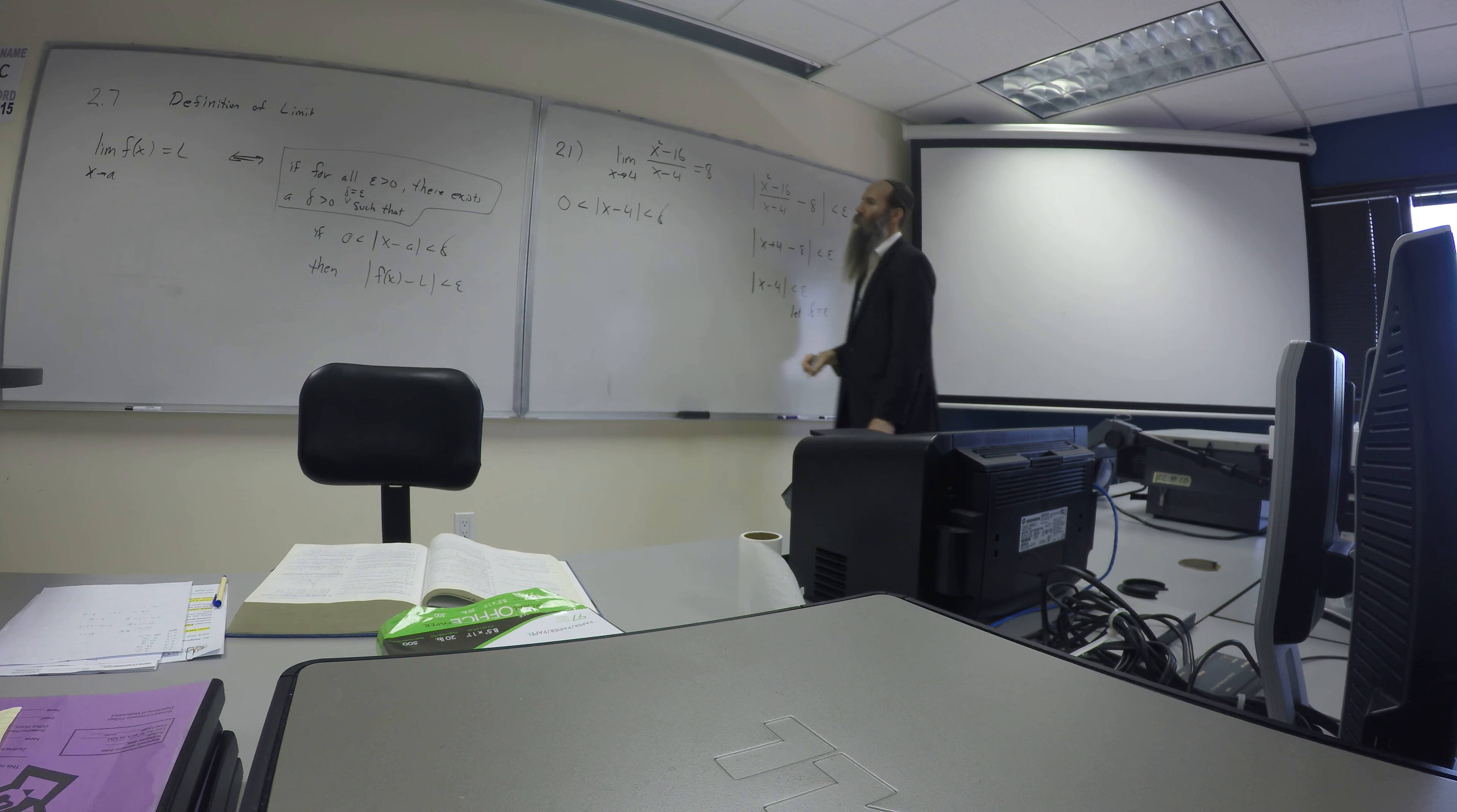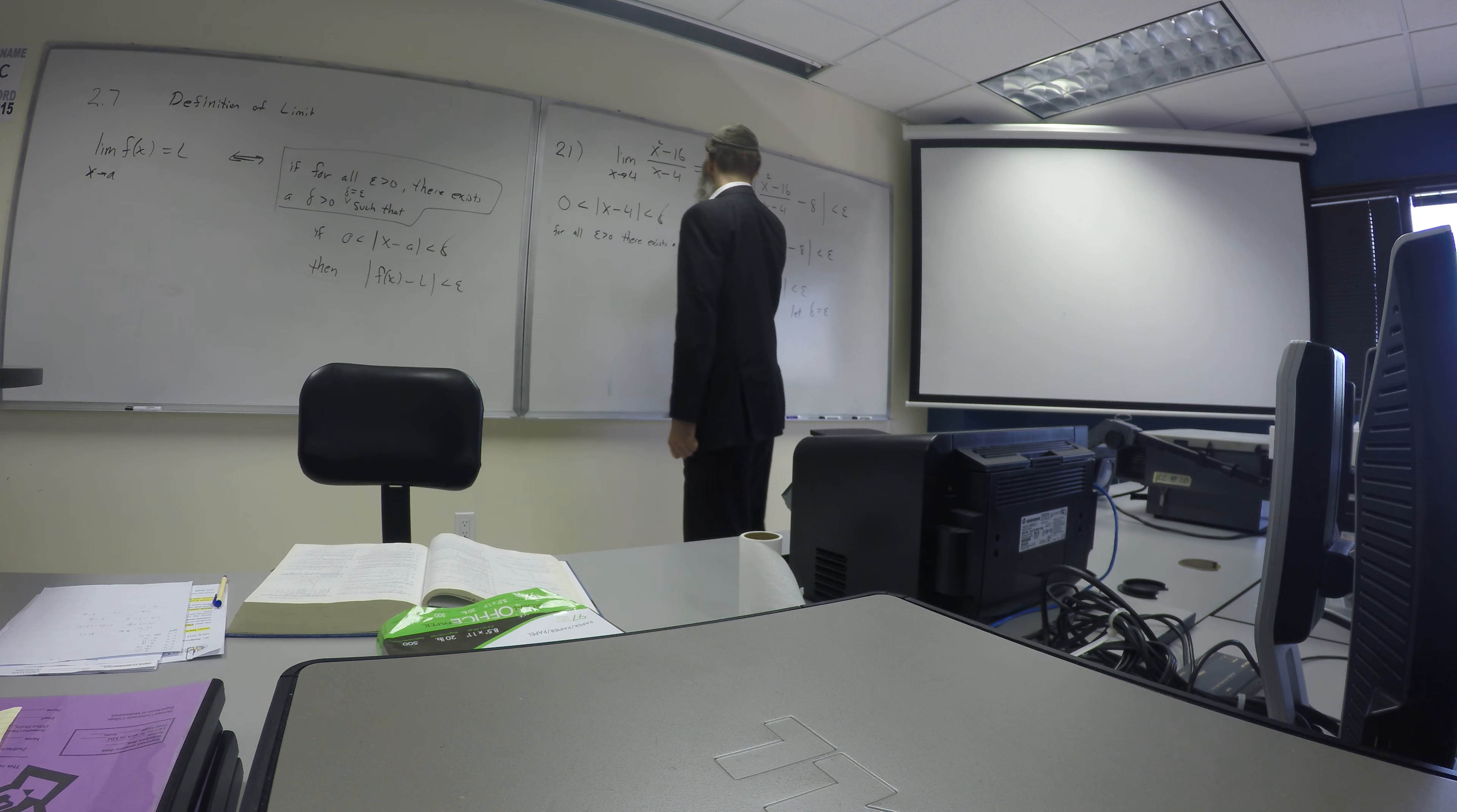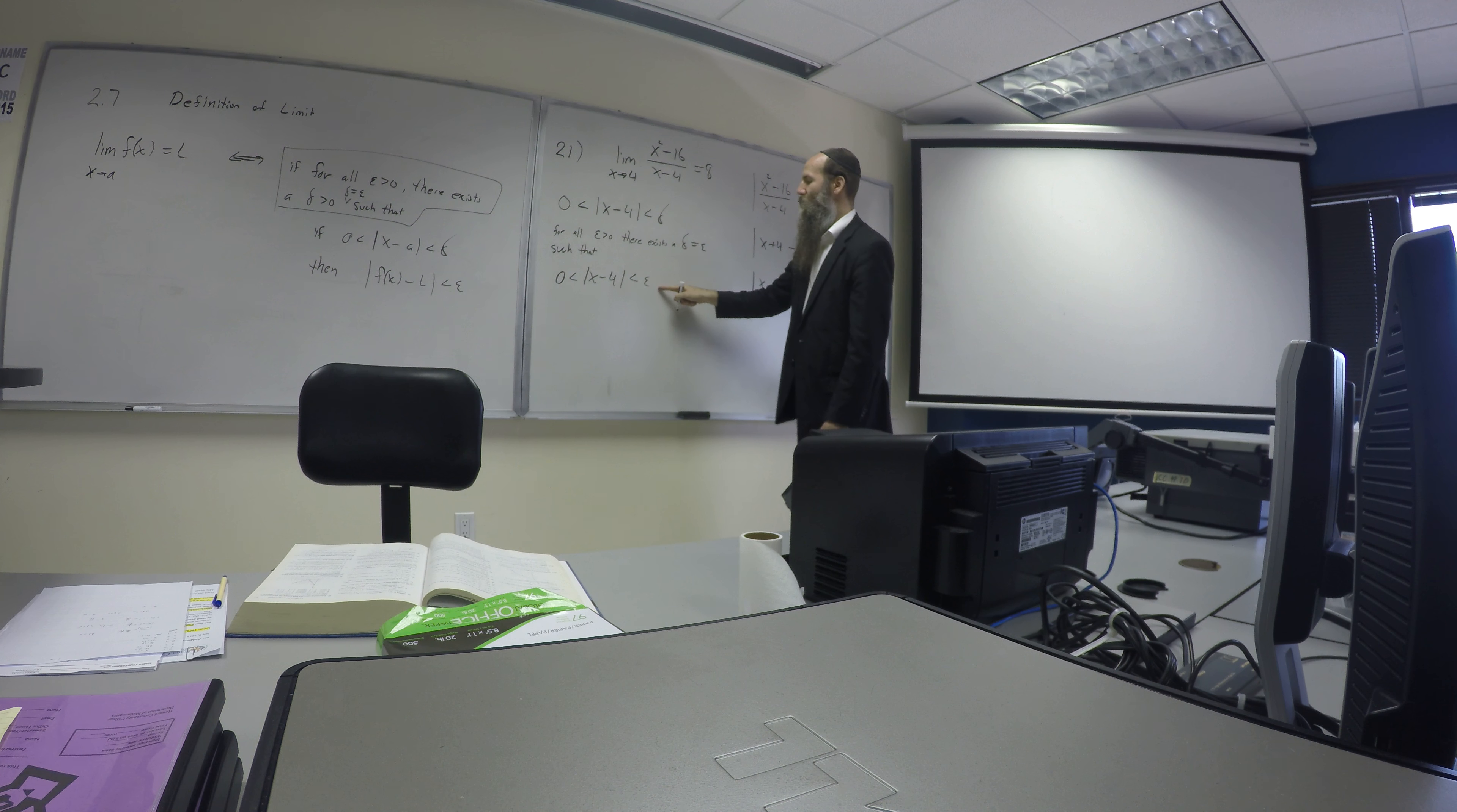Okay, now we know what to pick for delta, we'll start the proof again in proper order. Say, for all epsilon greater than 0, there exists a delta, which is equal to epsilon, such that, and now we just go through the formality. So if I start with this expression, that 0 should be less than x minus 4, less than epsilon itself, because delta, we're picking to be epsilon, right?